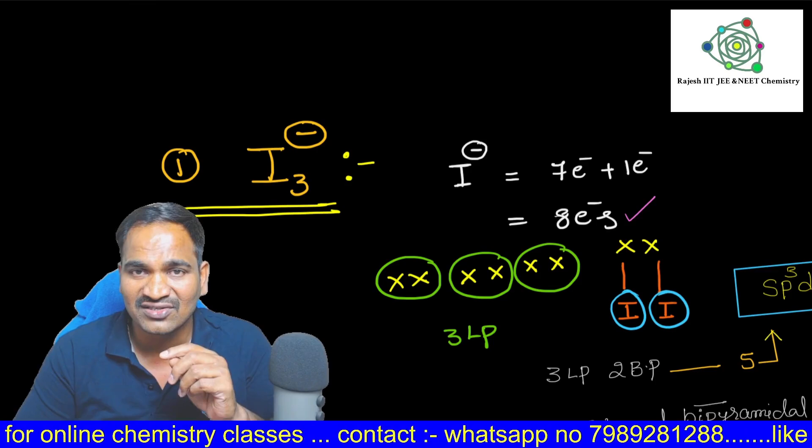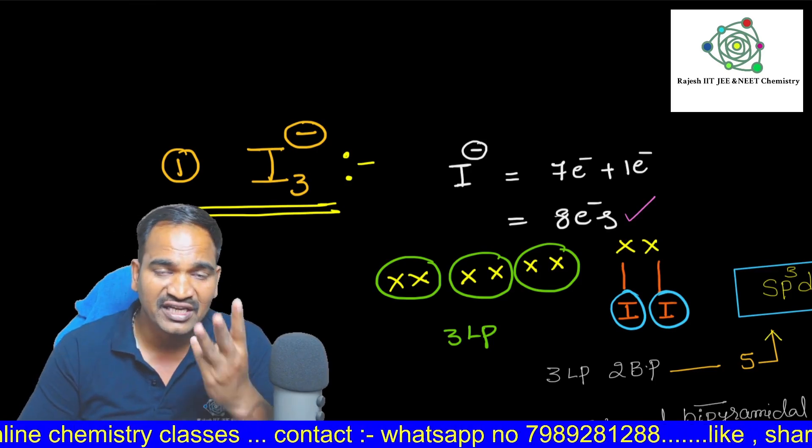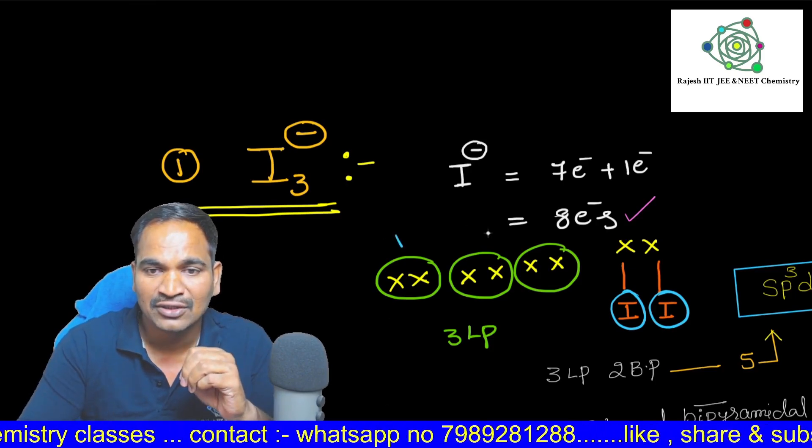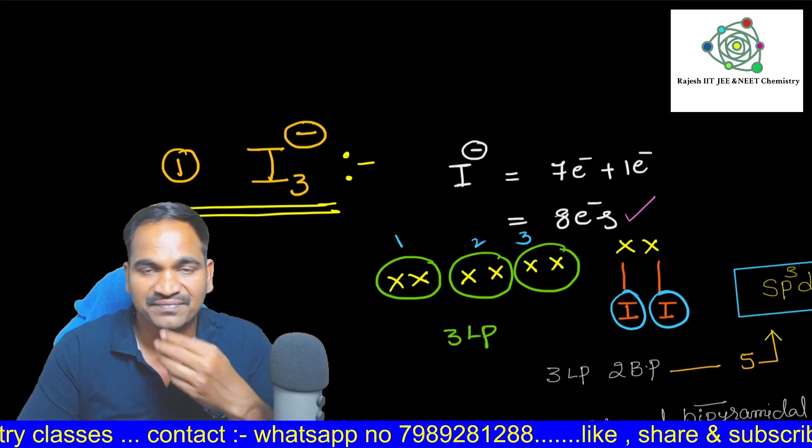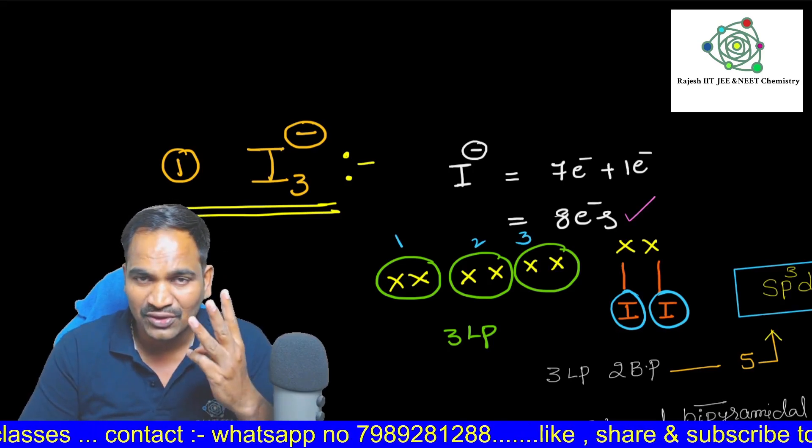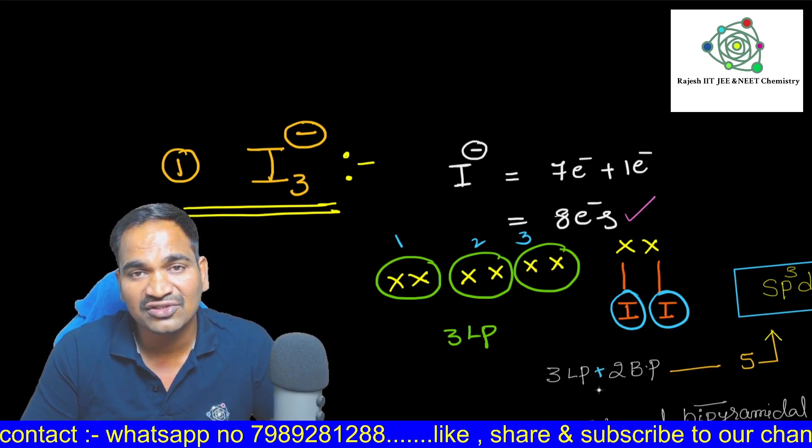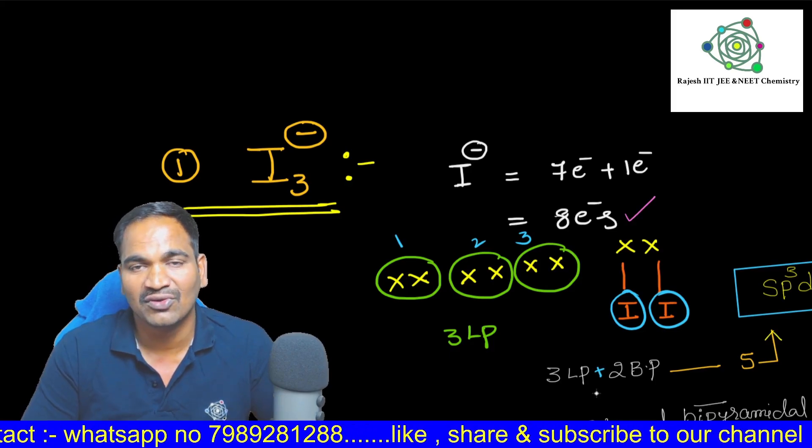Remaining how many electrons are not participating in the bond? Three lone pair of electrons. This is one, two and three. So three lone pairs, two bond pairs. Total how many electron pairs? Three plus two, total five.